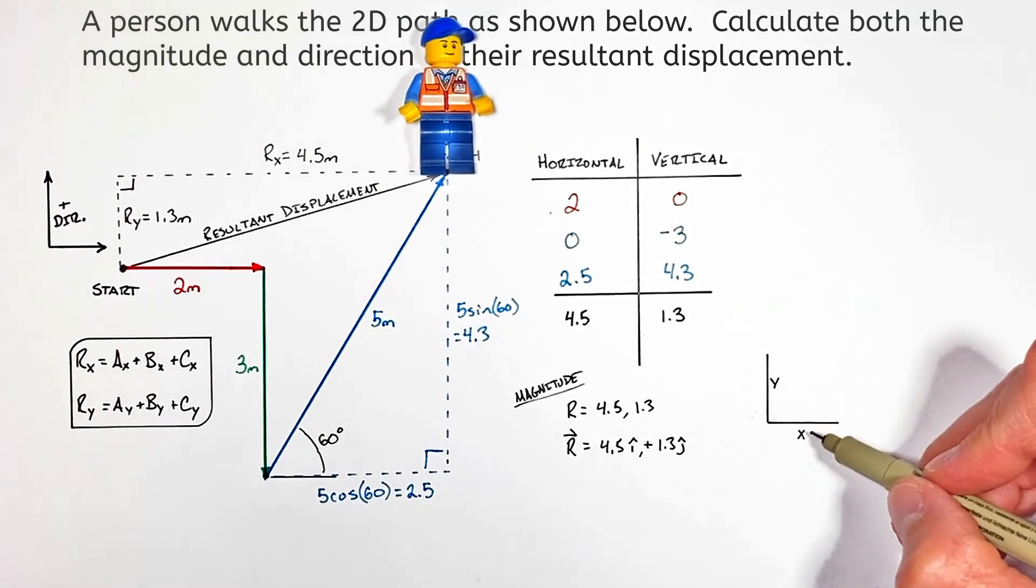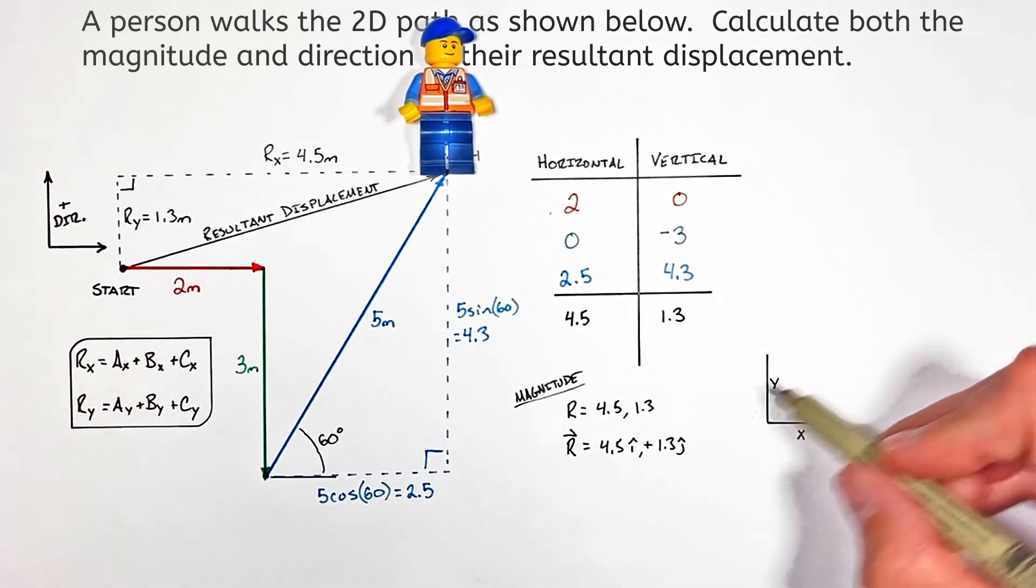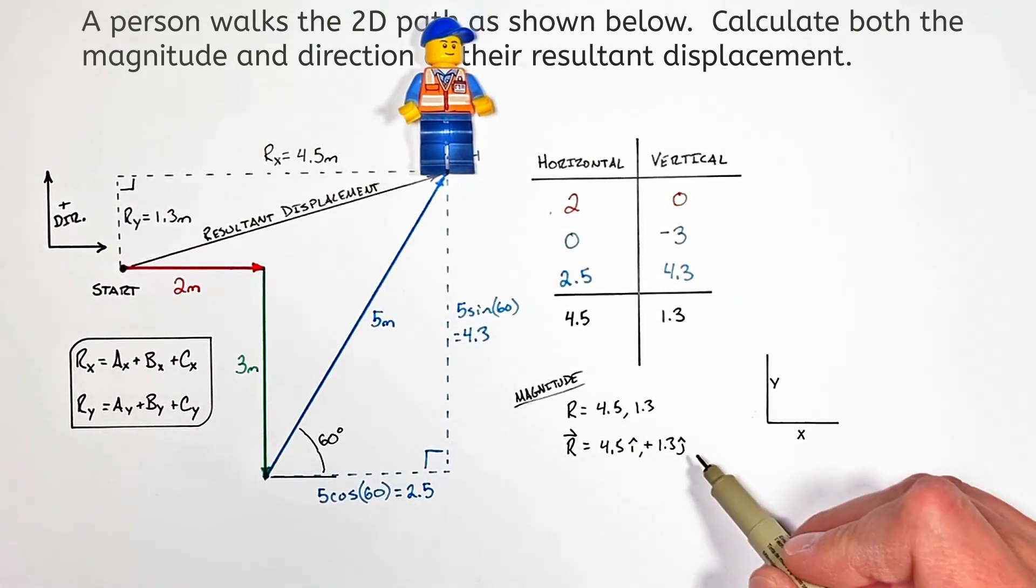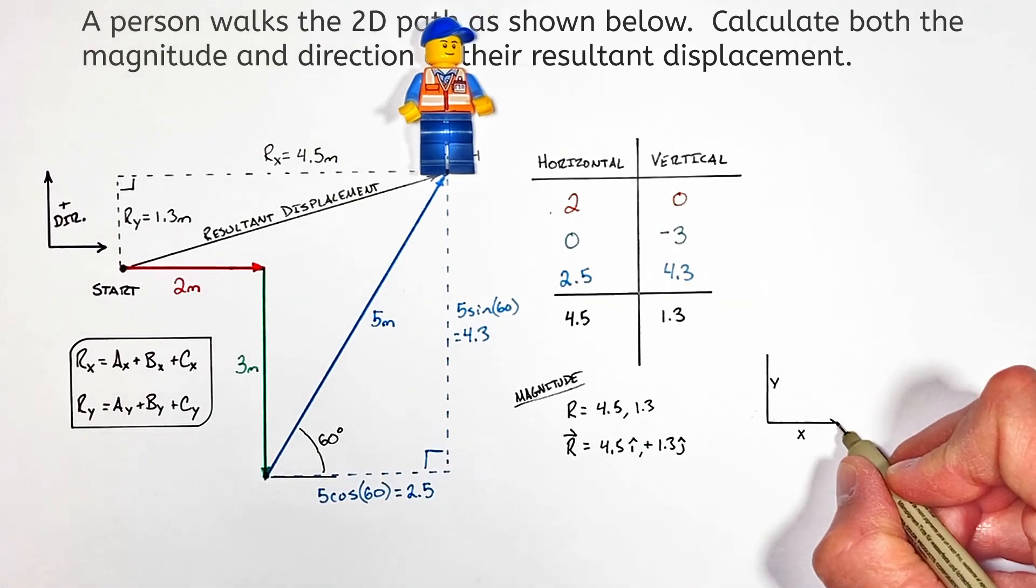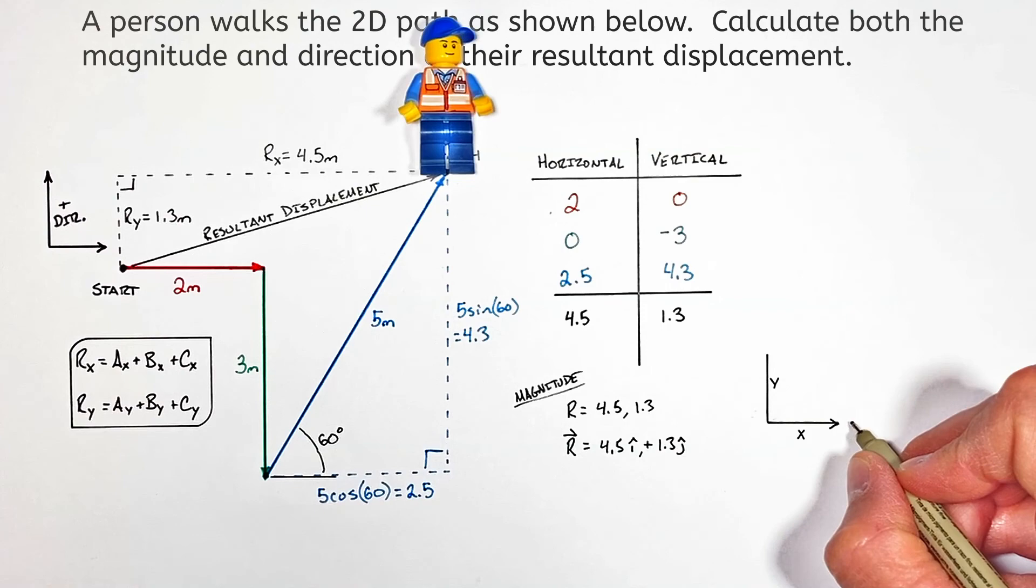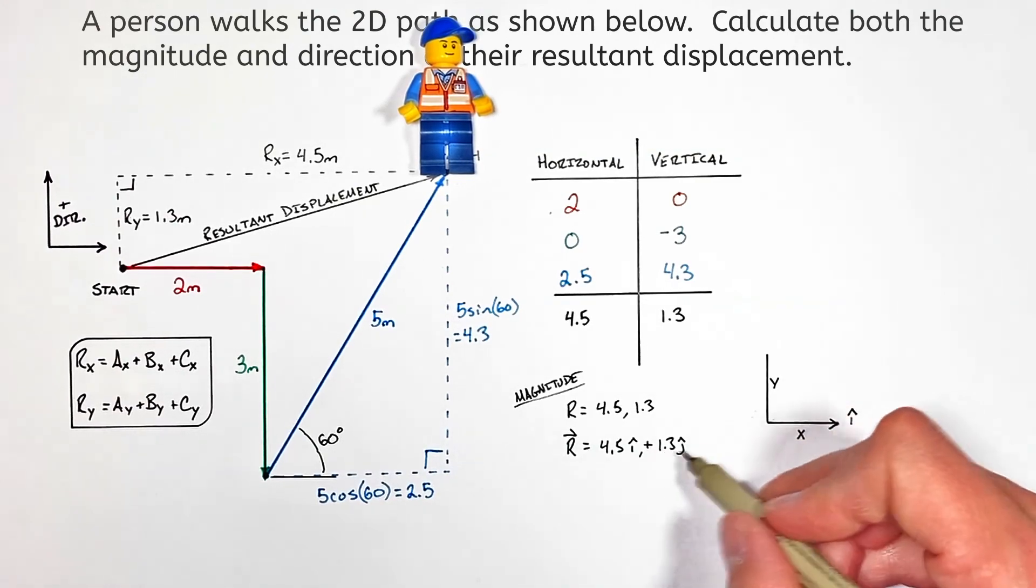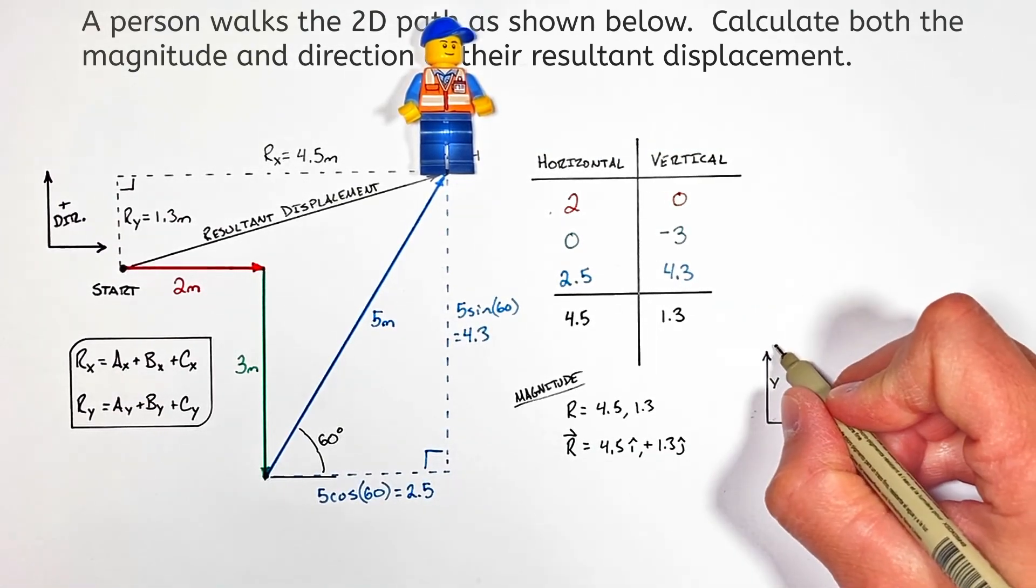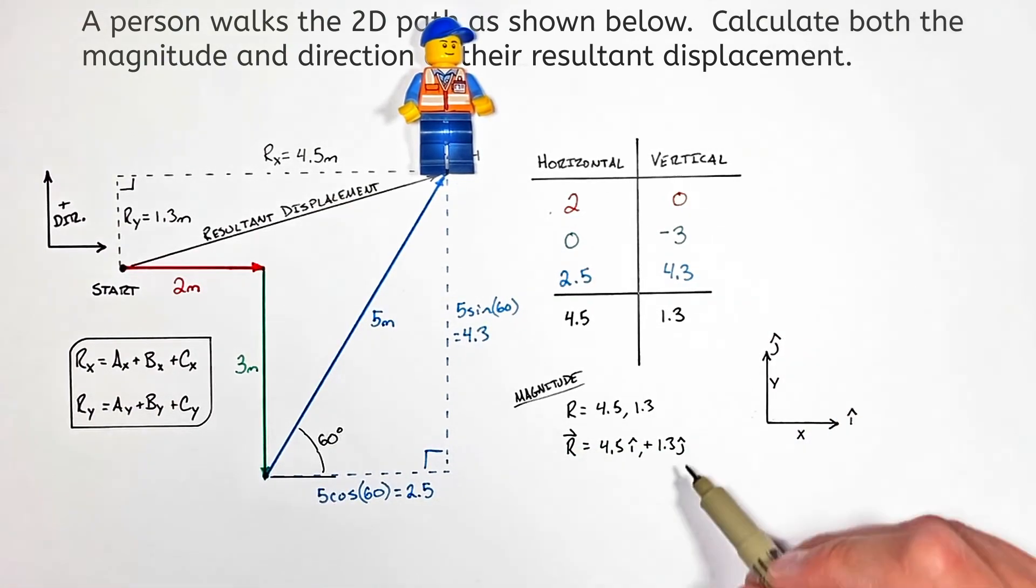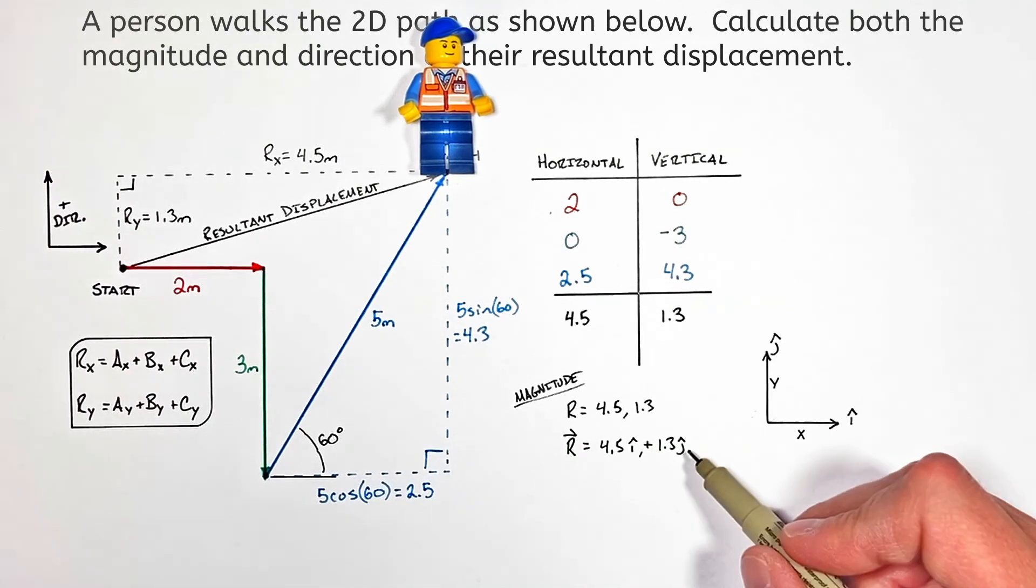Any coordinate plane has an x and a y axis, and in math you might talk about a vector as having an x and a y component. In physics oftentimes we'll talk about things being in the i and j direction. That's simply to say anything in the i direction is parallel to the x axis, and anything in the j direction is parallel to the y axis. These little roofs or hats on the letters are simply showing that we're talking about a direction.